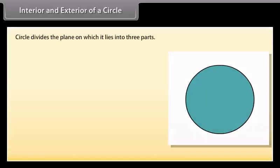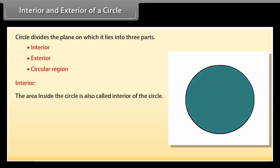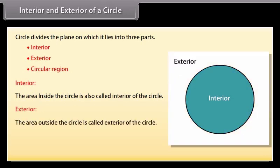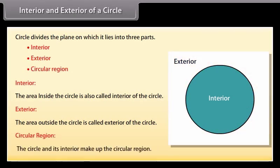Interior and exterior of a circle. A circle divides the plane on which it lies into three parts: interior, exterior, and circular region. The area inside the circle is called the interior of the circle. The area outside the circle is called the exterior of the circle. The circle and its interior make up the circular region.